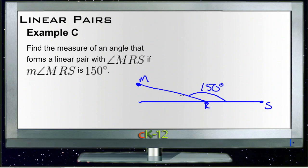What we want is the angle that forms a linear pair with it, so we want this angle over here. And we know that 150 added to that angle has to be 180, so this angle over here must be 30 degrees.